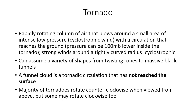The definition of a tornado: it is a rapidly rotating column of air that blows around a small area of intense low pressure. The wind associated with a tornado is said to be cyclostrophic, where there are significantly large pressure changes over very short distances. It has a circulation that generally reaches the ground, and the pressure can be 100 millibars lower inside the tornado than outside. Strong winds around a tightly curved radius — that's the cyclostrophic wind — with a very significant drop in barometric pressure within the funnel itself.